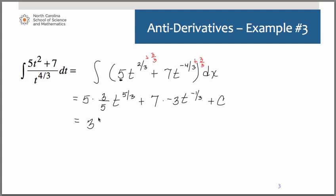Simplifying this, we have three t to the five thirds minus twenty-one t to the negative one third plus c. Again, feel free to check your answer, I highly suggest that, by taking the derivative of your answer and making sure you got your integrand.